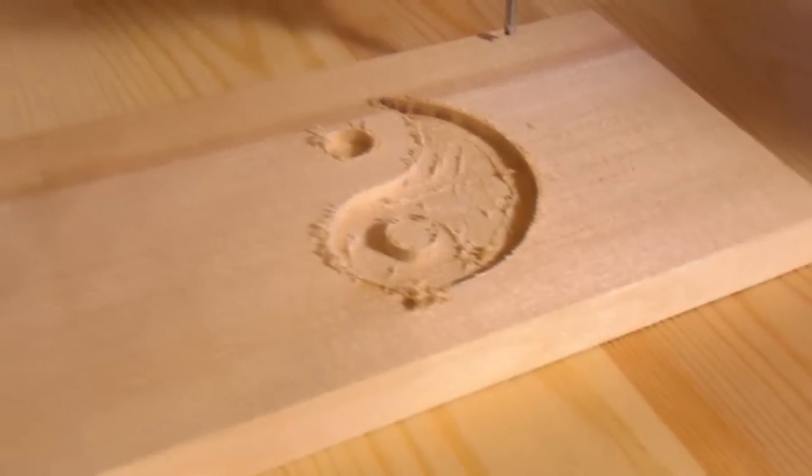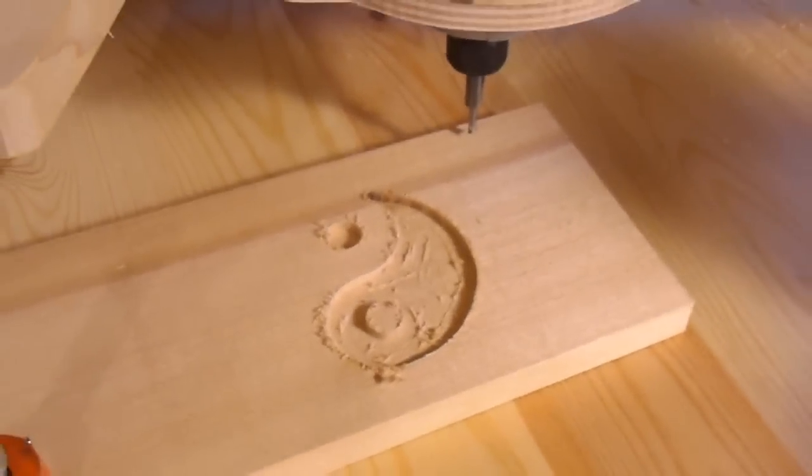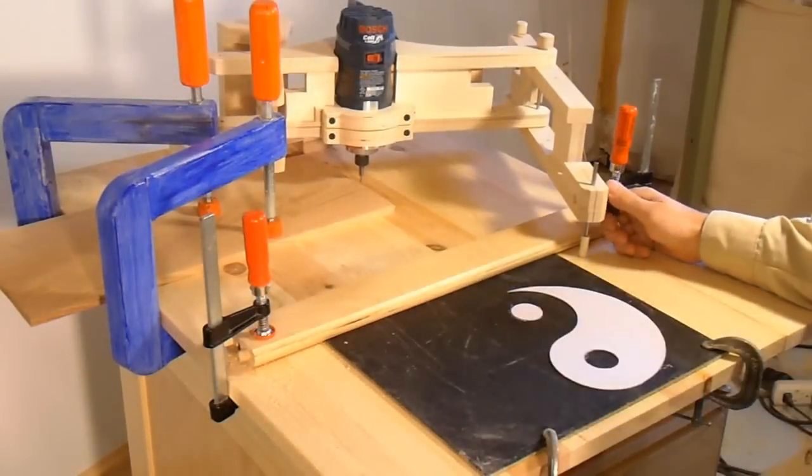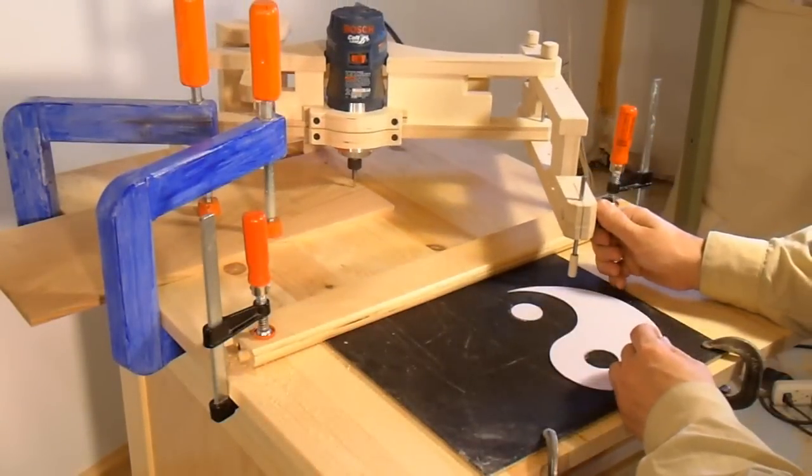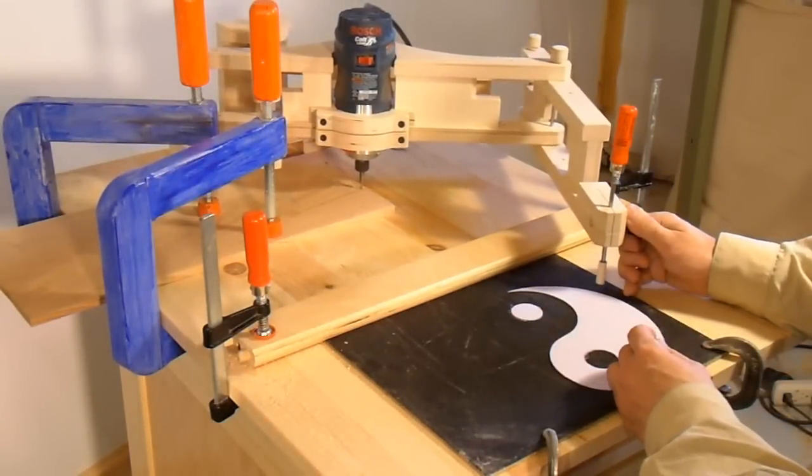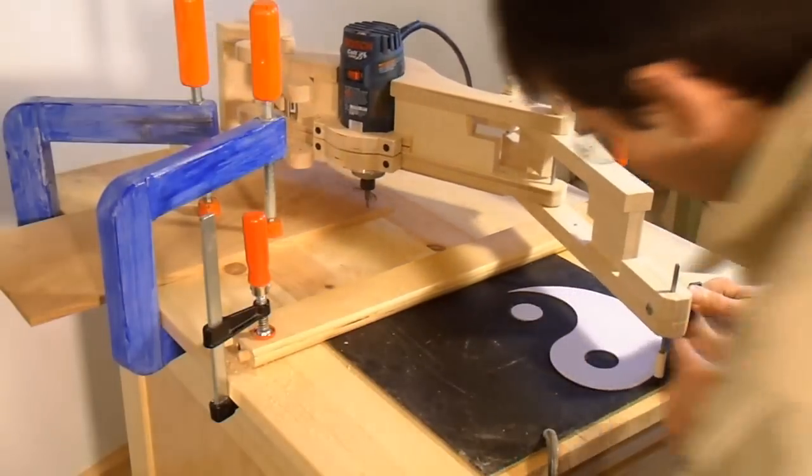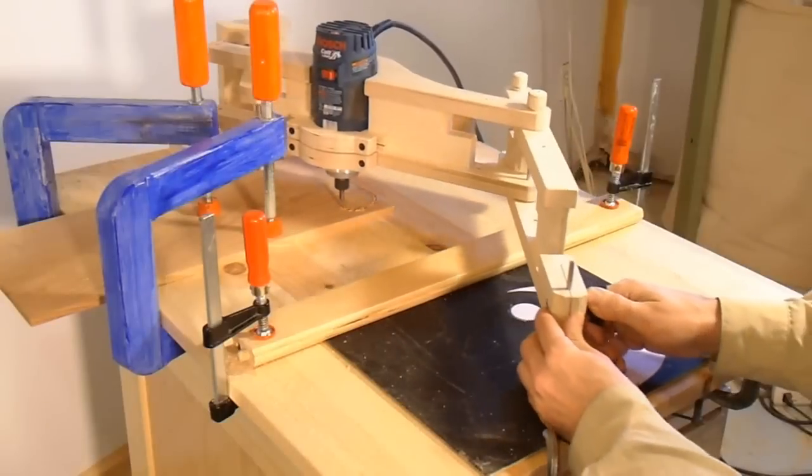Here's my routed cavity. Now I need to make an inlay that fits exactly into there. So now using my reverse template, which is made out of the pieces that I cut out of my first template, I'm going to carve out the exact opposite of that shape to mate with the cavity that I just cut.